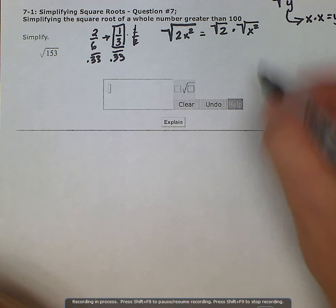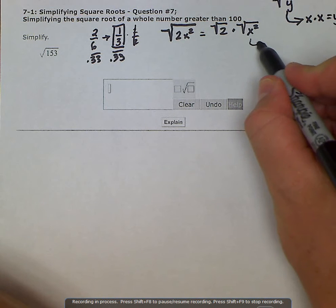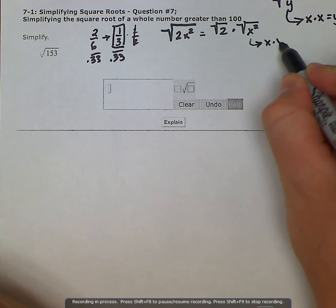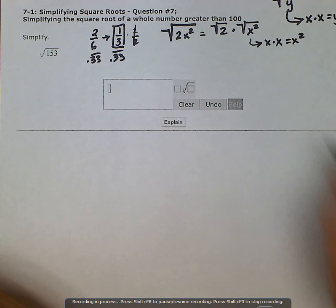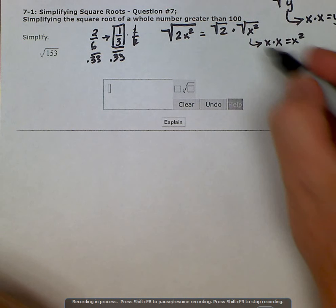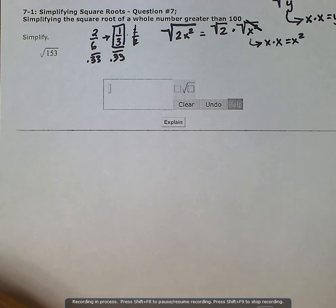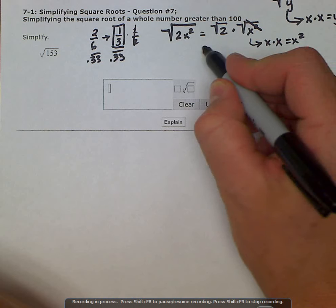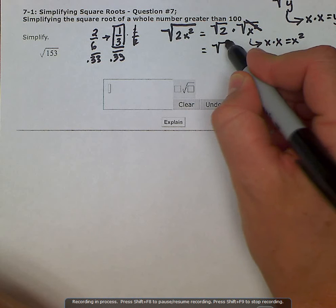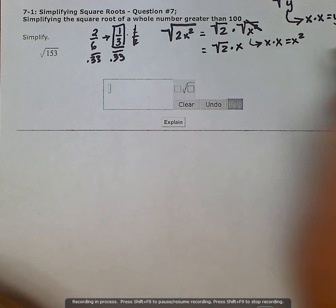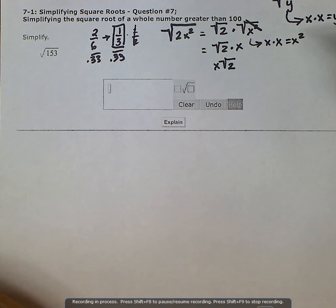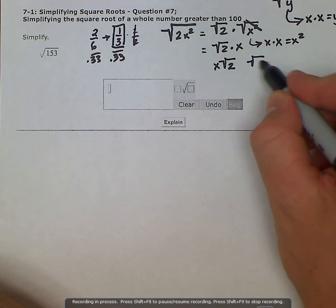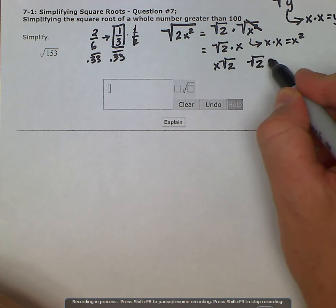This one should be fairly straightforward because we have x times x, of course, is equal to x squared. So the square root of x squared, these are inverse operations, and they negate each other. So they cross each other out, and we're left with the square root of 2 times x. Either way is fine.